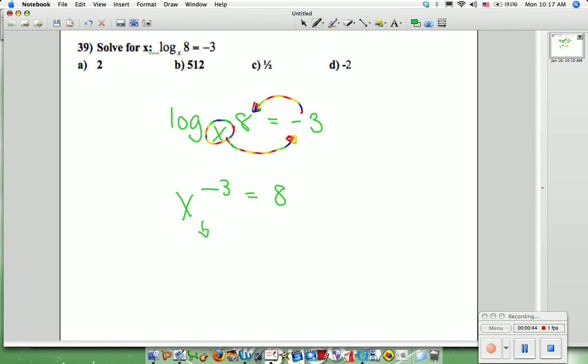So we're going to write that as 1 over x to the 3rd power is equal to 8 over 1. We're going to cross multiply that to get 8x to the 3rd power, which is equal to 1.